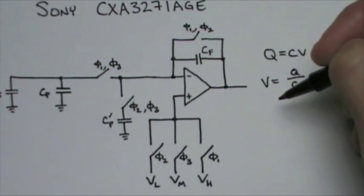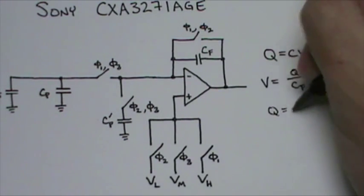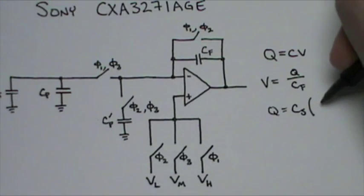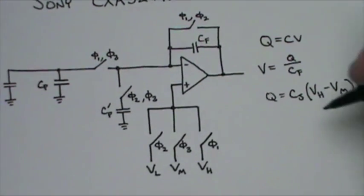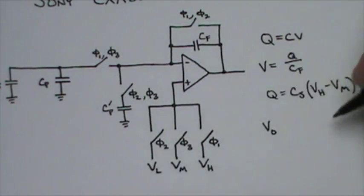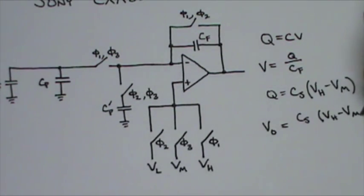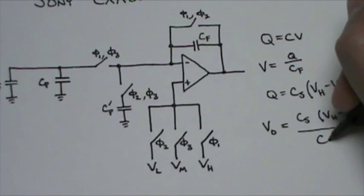Finally, the output voltage of this amplifier is going to be equal to Cs times VH minus Vm divided by CF. VH, Vm, and CF remain constant, so we can determine our sensed capacitance, CS.